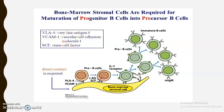The pre B cells start expressing interleukin-7 receptors on their surface, and the bone marrow stromal cells secrete interleukin-7. These interleukin-7 molecules bind to the receptors, and the pre B cells get detached from the surface of the bone marrow stromal cell and start proliferating. These pre B cells then get converted to immature B cells, which express the membrane-bound pre B cell receptor on their surface.